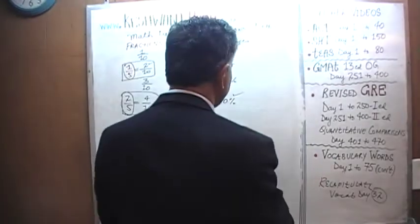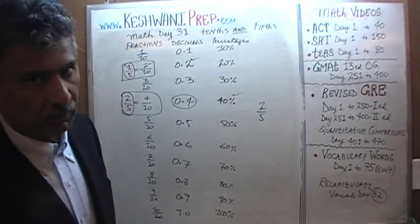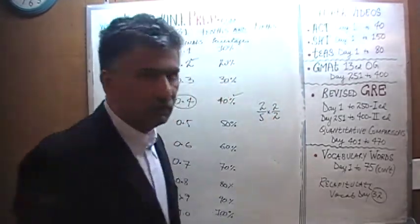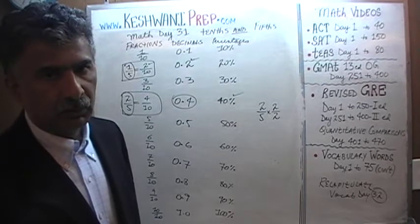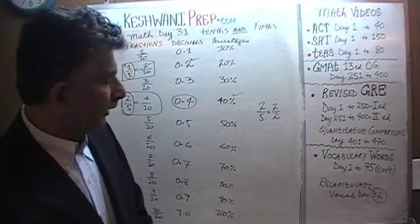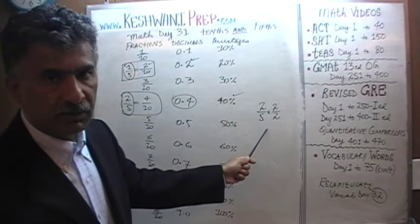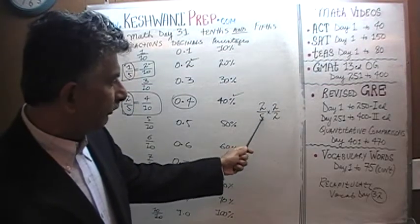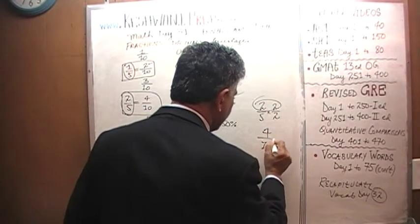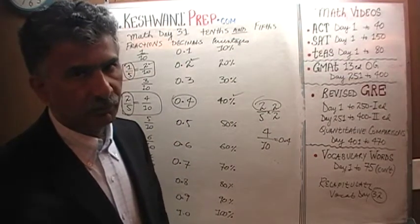If we have 2 fifths and we want to convert the bottom into a tenth, we multiply the top and bottom by 2 — which is perfectly okay to do. You can take any fraction at all, and as long as you multiply the top and bottom by the same number, we are essentially multiplying 2 fifths by 1, and multiplying any number by 1 does not change its value. So 2 fifths is still 2 fifths — it's just now 2 times 2, which is 4, over 10. Of course now we know it is 0.4. Don't memorize them — 2 fifths is just 4 tenths.